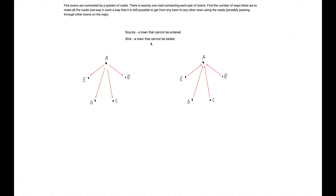We deduce that a configuration with a source and/or a sink will not work. But we don't know if this is a sufficient condition for there to be a path from every town to every other town, because there could be some configuration without a sink or source where it's still impossible to get from town A to town B.